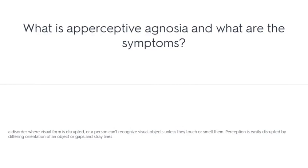What is apperceptive agnosia and what are the symptoms? A disorder where visual form is disrupted — a person can't recognize visual objects unless they touch or smell them. Perception is easily disrupted by differing orientation of an object or gaps in drawn lines.